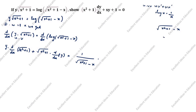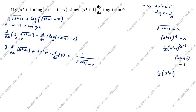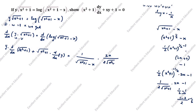We write √(x²+1) as (x²+1)^(1/2) − x. Differentiating: (1/2)(x²+1)^(1/2−1) · 2x + 0 − 1. The power 1/2 − 1 = −1/2. So we get (1/2)(x²+1)^(−1/2) · 2x − 1, which simplifies to x/√(x²+1) − 1. The 2s cancel.